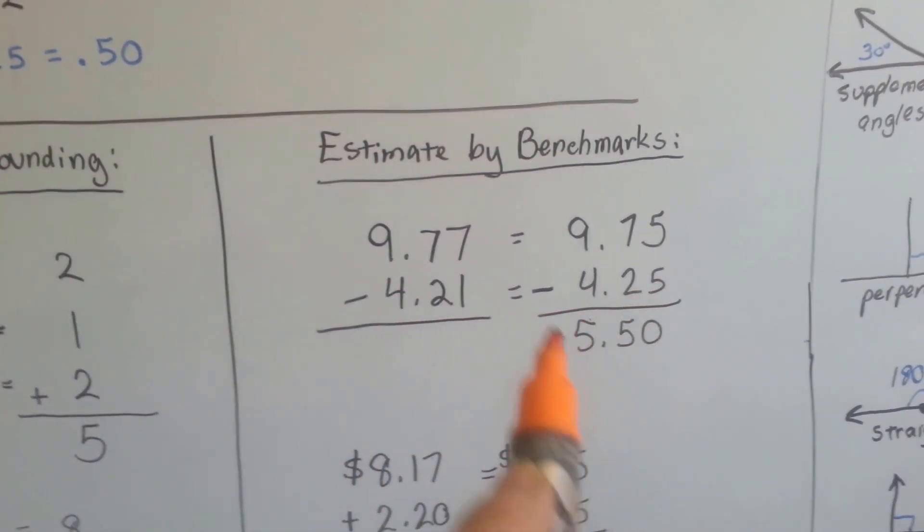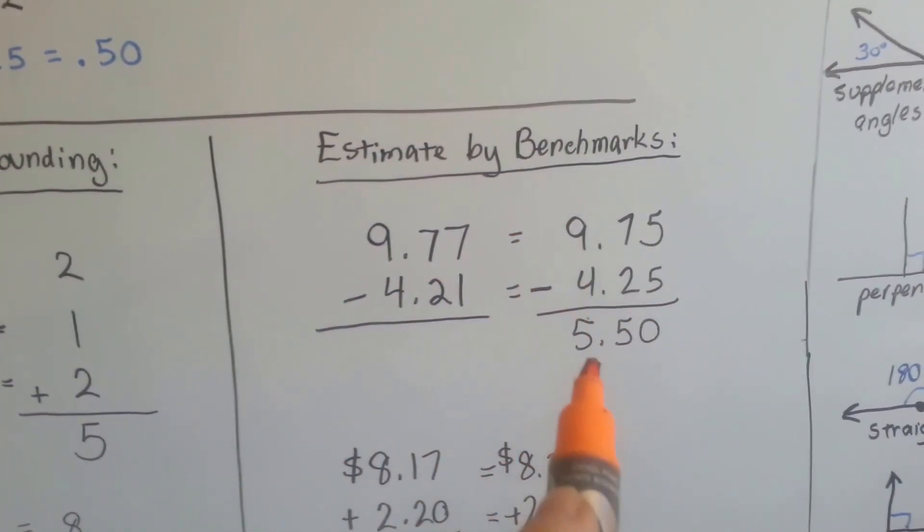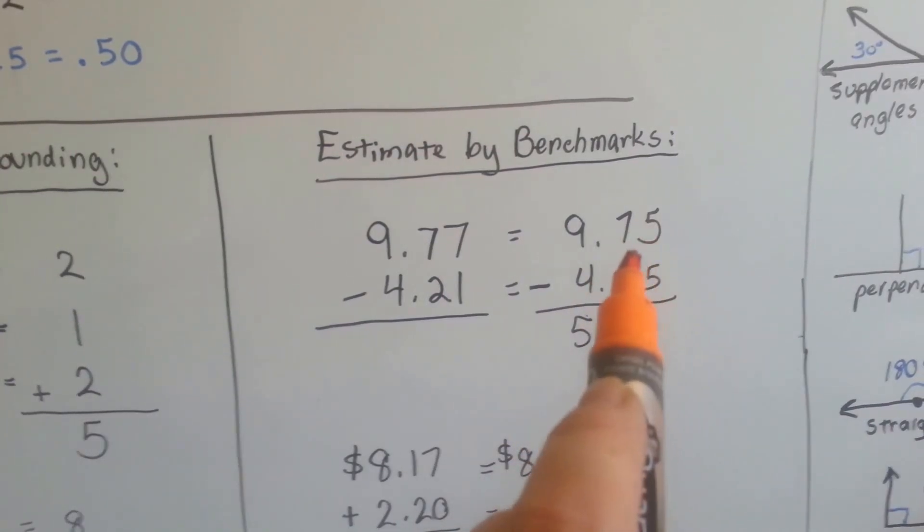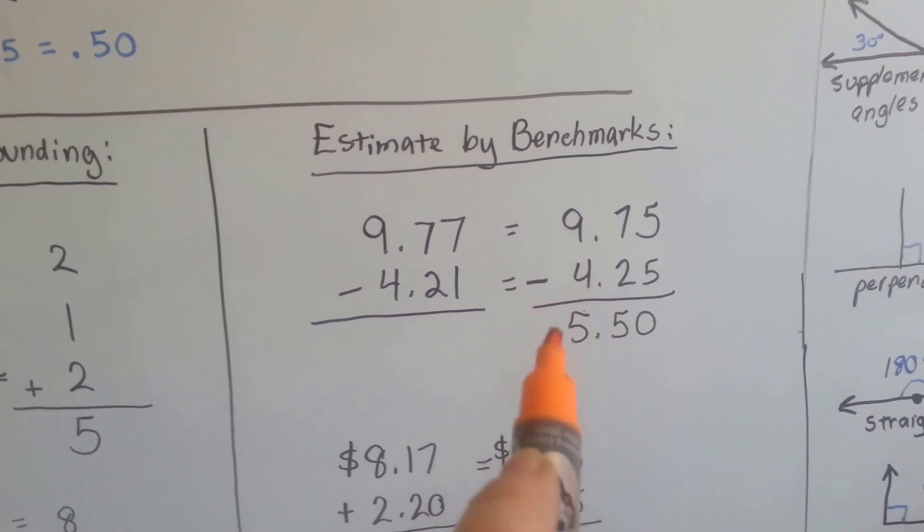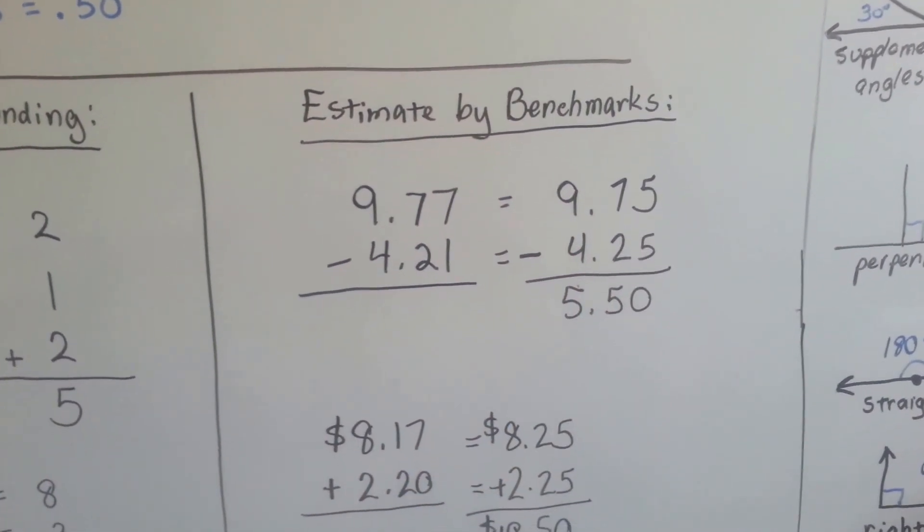We subtract them and we get $0.75 take away $0.25 is $0.50. $9 take away $4 is $5 and we have $5.50.